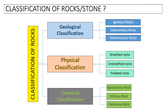Geological, physical, and chemical rocks are further classified into such types of rocks. In geological classification, rocks are further classified into igneous rocks, sedimentary rocks, and metamorphic rocks.